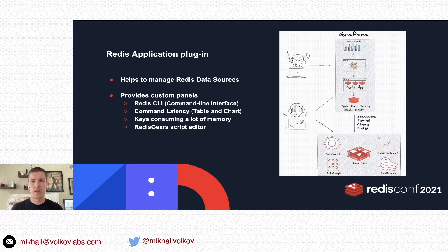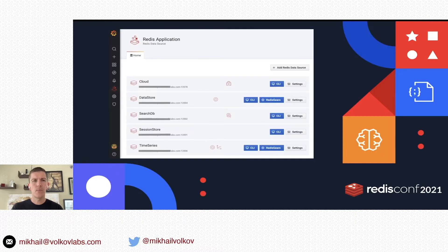How do you manage multiple data sources connecting to multiple databases? For that, we introduced the Redis Application Plugin, which helps you manage them and provides custom panels: Redis CLI, command latency, keys consuming a lot of memory, and a Redis Gears script editor. The main screen of the Redis Application shows information about configurable Redis data sources with information about the modules, and you can jump to the CLI dashboard or Redis Gears dashboard.